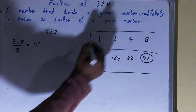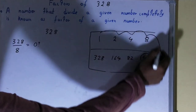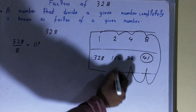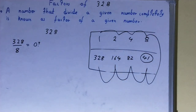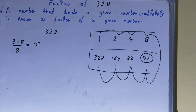The set of factors for the number 328 will be: 1, 2, 4, 8, 41, 82, 164, and 328. This was all about factors of the number 328. If you found the video helpful, please hit the like button, consider subscribing, and thanks for watching.